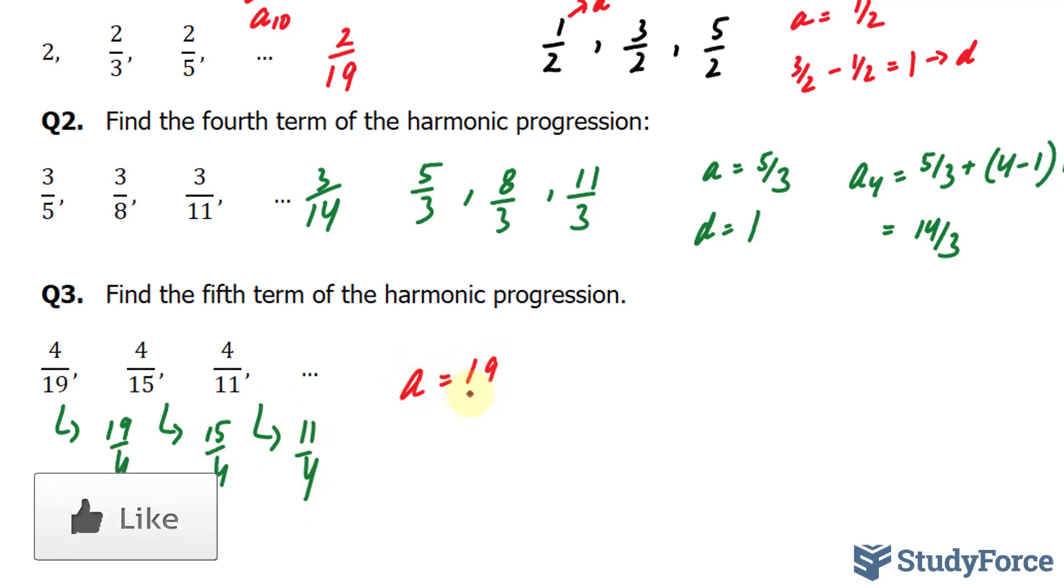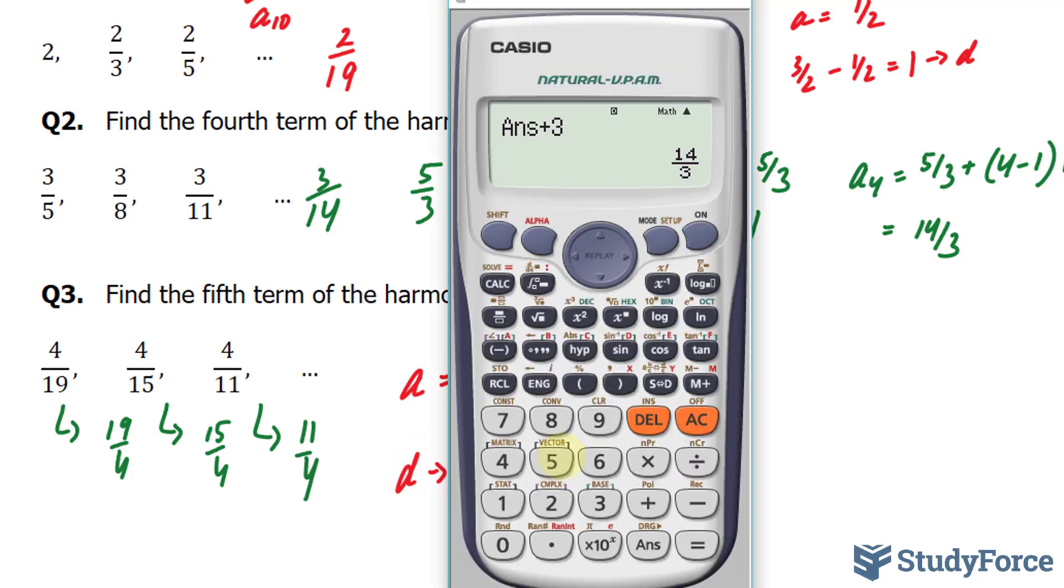A is equal to 19 over 4. My difference, I'm going to find that out right now. 15 over 4 minus 19 over 4. That gives us negative 1.